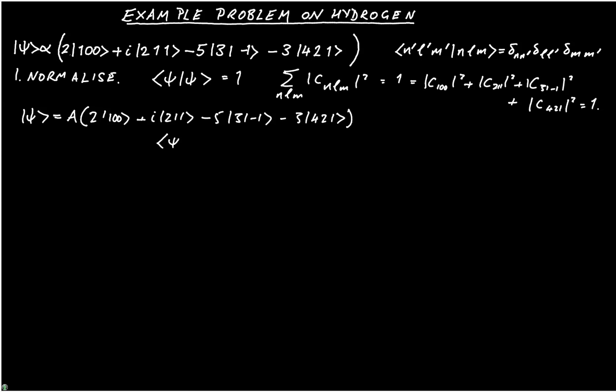And the requirement that ⟨ψ|ψ⟩ equals 1 tells us that A² times (4 + 1 + 25 + 9) must equal 1, which tells us that A must equal 1 over the square root of 39. And that gives us the normalizing factor.